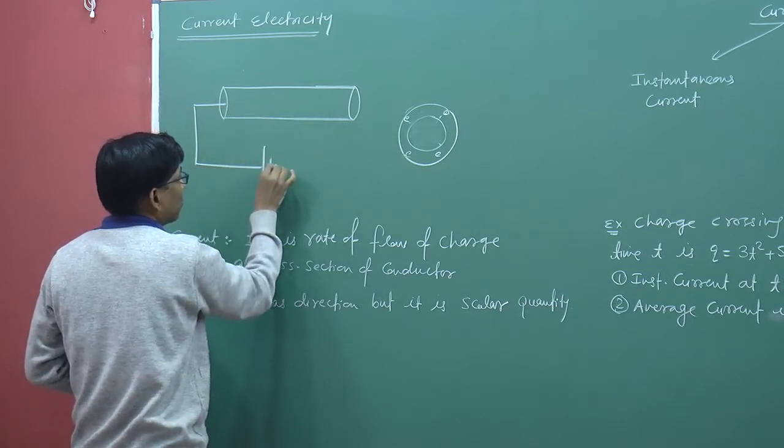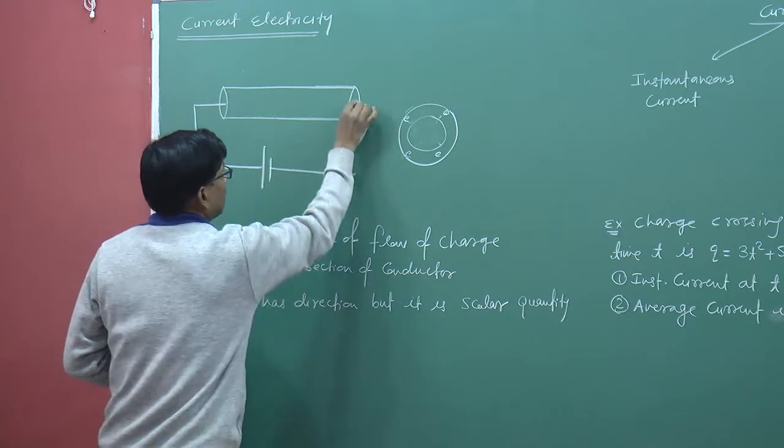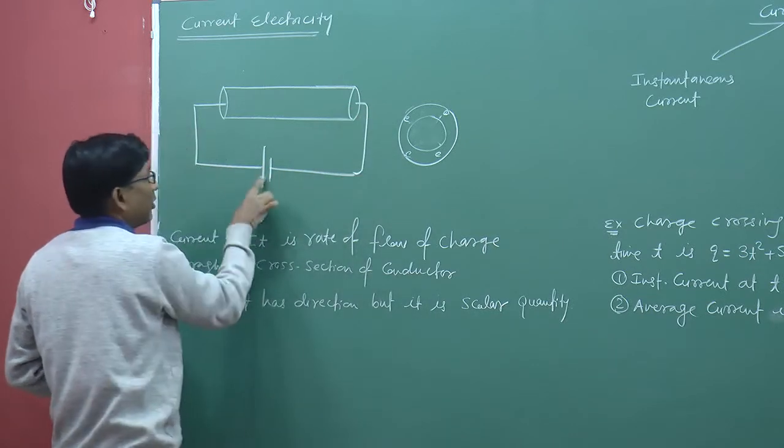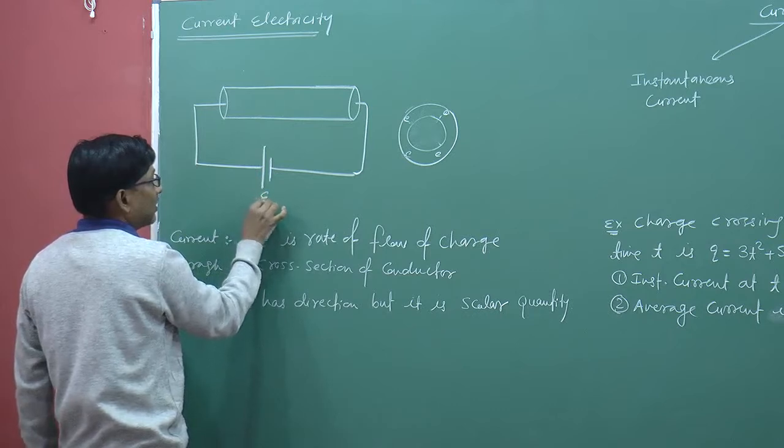Here, the charge flows from high potential to low potential. The power source drives the charge — it maintains the potential difference needed for the charge to flow continuously.